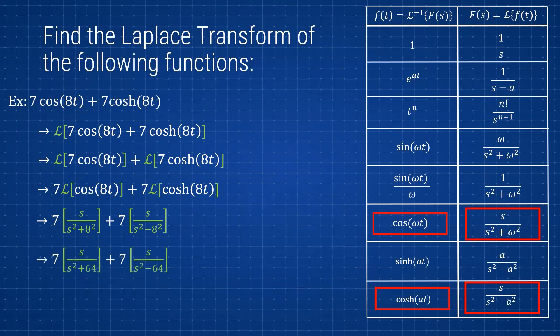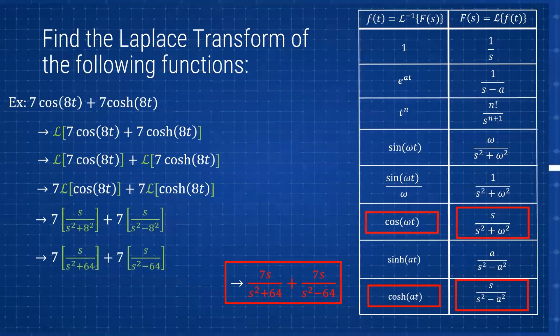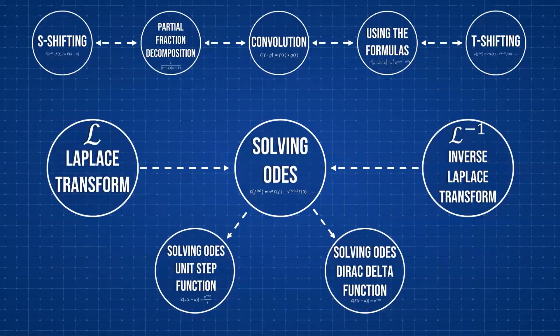In this case, ω = 8 and a = 8 for their respective transforms. After writing down the Laplace transforms and distributing the coefficient 7, our final answer is: 7s/(s² + 64) + 7s/(s² − 64). This is how you find the Laplace transform of functions. In the next video we're going to cover the inverse Laplace transform, going from the s-domain back to the t-domain and applying these tools to solve differential equations. Good luck!